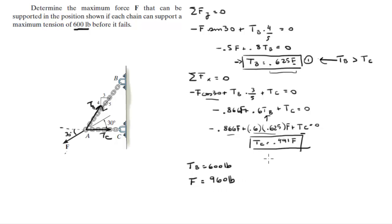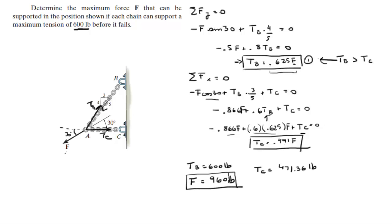With F equal to 960 pounds, we can also find Tc: Tc equals 960 times 0.491, which gives Tc equal to 471.36 pounds. The final answer is a maximum force F of 960 pounds, with tension B at 600 pounds and tension C at 471.36 pounds.